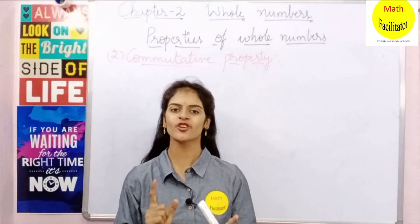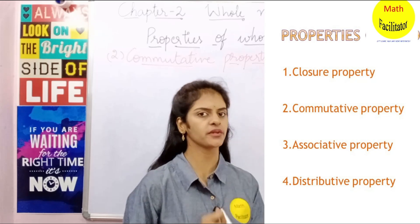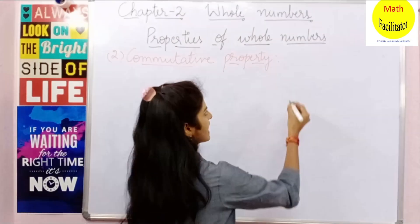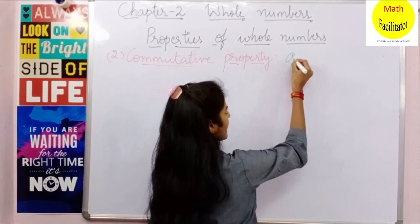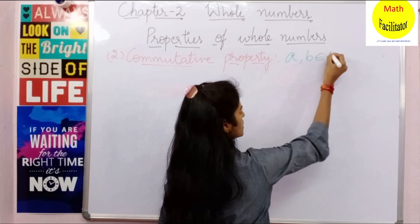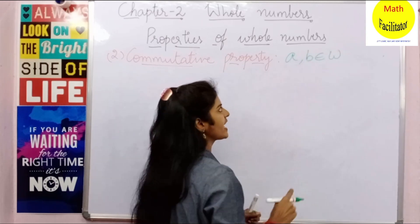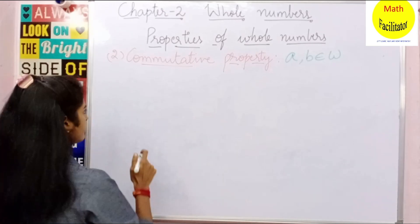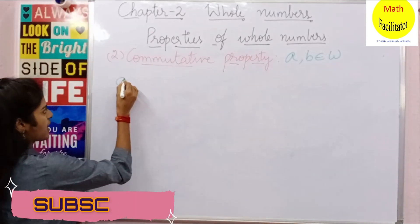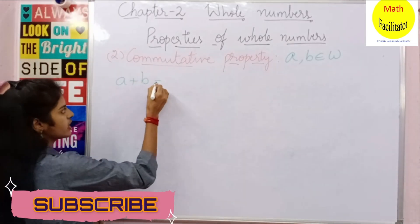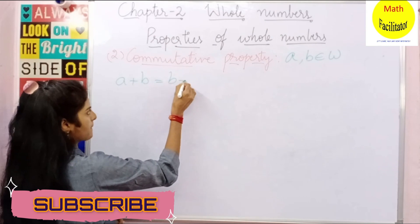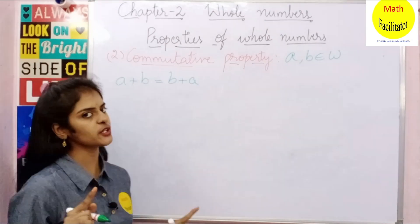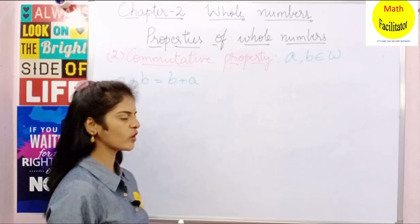The second property is commutative property. Suppose A and B are two whole numbers. A and B belong to whole numbers. Under addition, if A plus B is equal to B plus A, then we say that commutative property is satisfied.